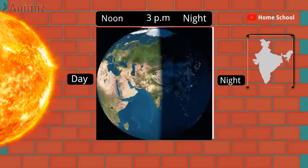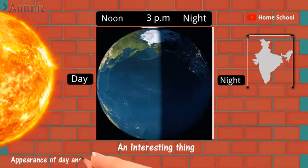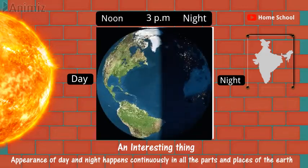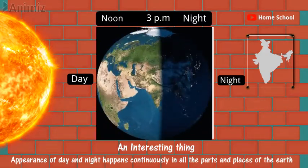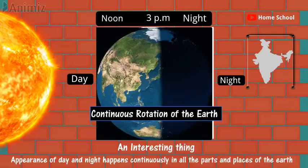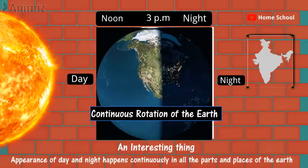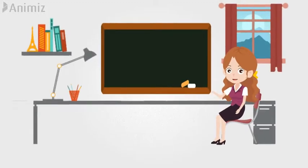And here an interesting thing is that appearance of day and night happens continuously in all the parts and places of the Earth, and it happens because of the continuous rotation. I hope this video was helpful.